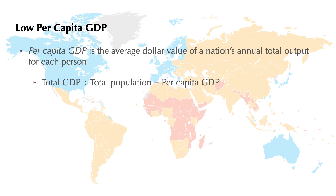Per capita GDP, a widely used indicator of the standard of living, is the average dollar value of a nation's annual total output for each person. The per capita GDP is calculated by dividing a nation's total GDP by its total population.